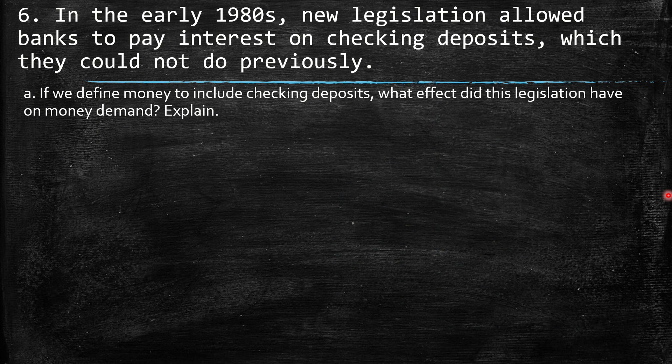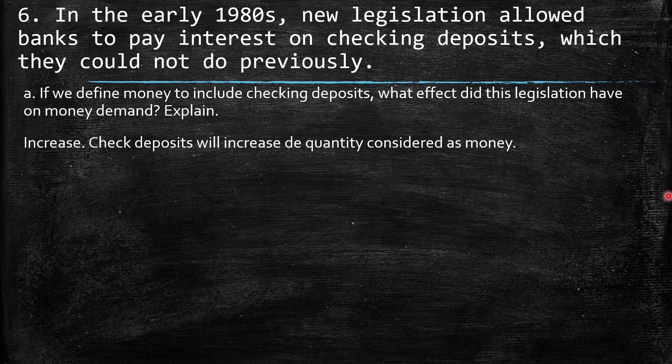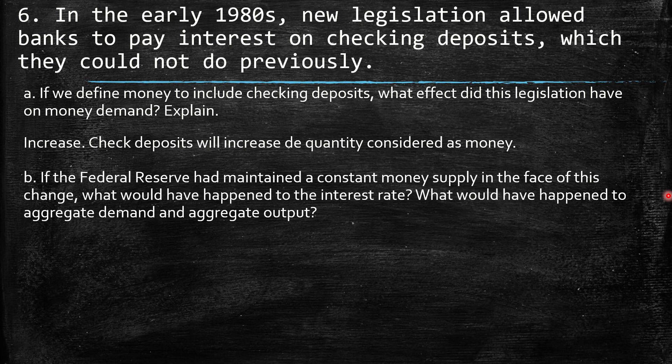Question 6: In the early 1980s, new legislation allowed banks to pay interest on checking deposits, which they could not do previously. Since we define money to include checking deposits, this legislation increased money demand. Checking deposits are now counted as money — not only cash but checking deposits as well — so there is an increase in the quantity of money.